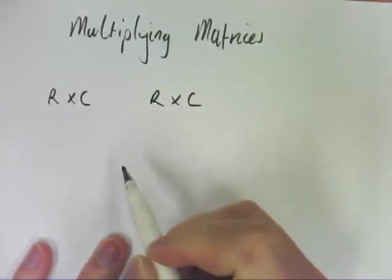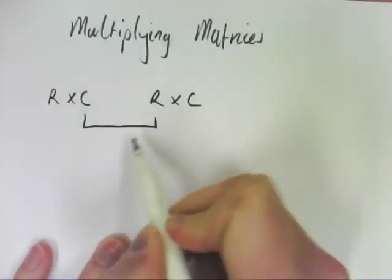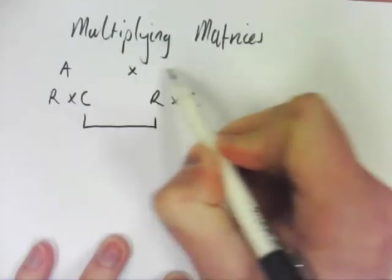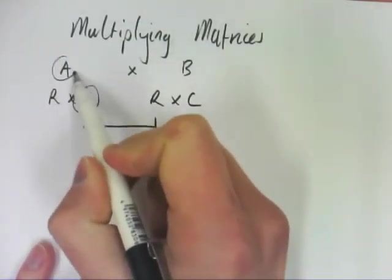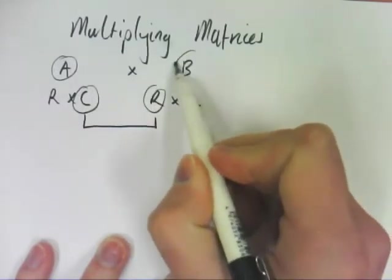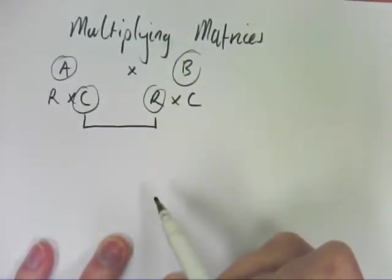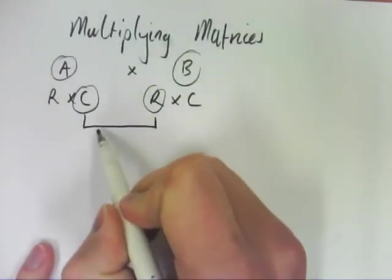that when you have two matrices, if you're doing A times B, so matrix A times matrix B, the columns in matrix A are the same as the rows in matrix B. So that tells you whether you can or cannot.